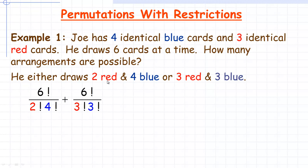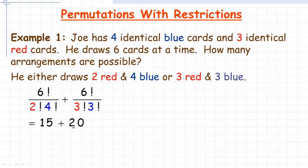You can think of this as two R's and four B's, where all the blue ones are identical and all the red ones are identical. So we would take six factorial, because there are six objects, and divide by two factorial and also by four factorial, because the red ones are identical and so are the blue ones. That gives us the number of ways he can select two red and four blue.